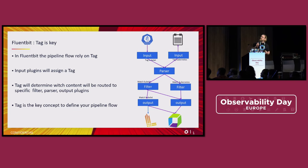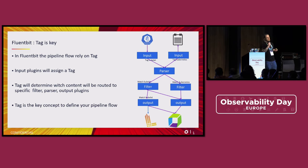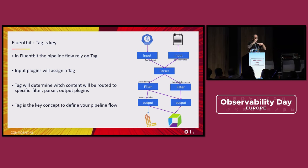In the FluentBit design, the way you design pipelines is quite convenient. When you receive something, you can tag it — for example, 'this is Kubernetes.' Then when you design your pipeline flow, you apply plugins, filters, or parsers and say this plugin will only be applied for tags matching 'kubernetes.*' or whatever. It's a very lightweight pipeline — just by playing with those tags you can do very complicated transformations, and compared to the Collector, the pipeline file will be much shorter.